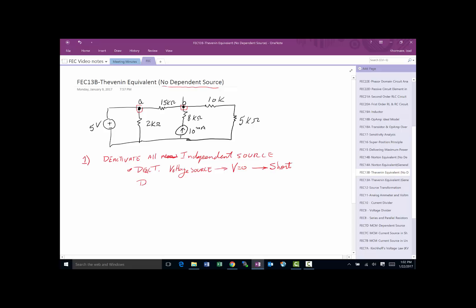Now, what does it mean to deactivate a current source then? Well, you ask the same question. You say, what is the job of a current source? The job of a current source is to deliver I. So if I want to deactivate it, I got to make sure no current flows through it. So how can I make sure no current flows through it? You simply do an open.